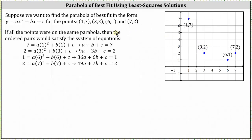If all the points were on the same parabola, then the ordered pairs would satisfy the equation y equals ax squared plus bx plus c, and using the four points, we can form the following system of equations. Using the ordered pair (1, 7), we get a plus b plus c equals 7. Using the ordered pair (3, 2), we get 9a plus 3b plus c equals 2.